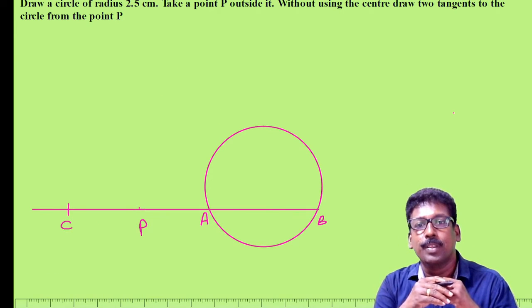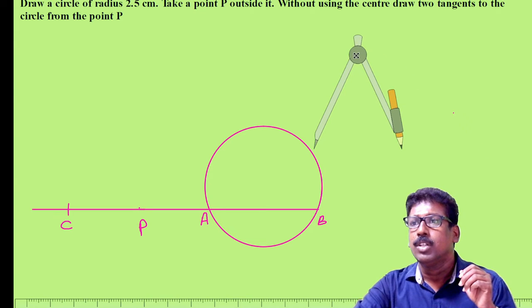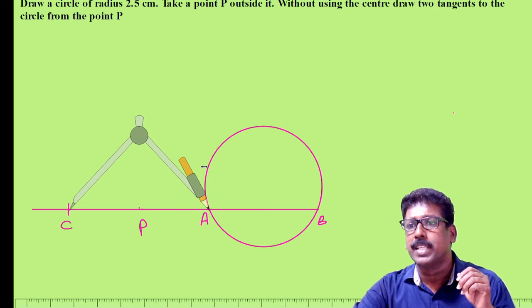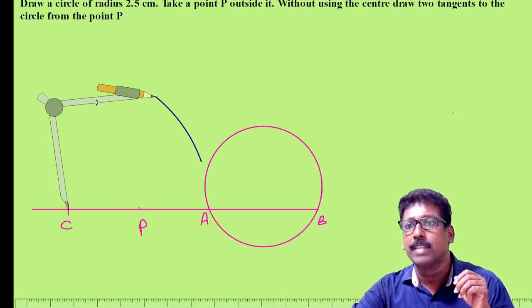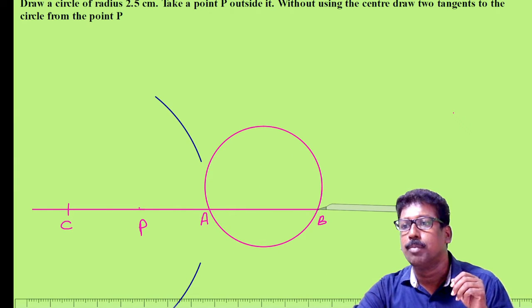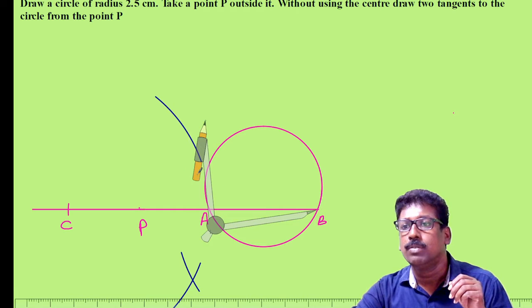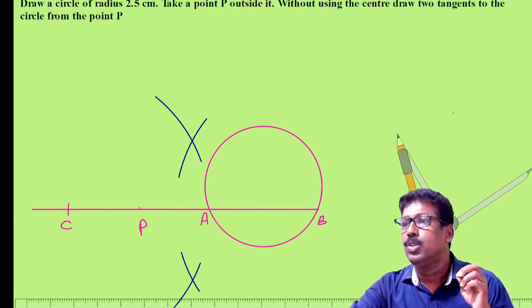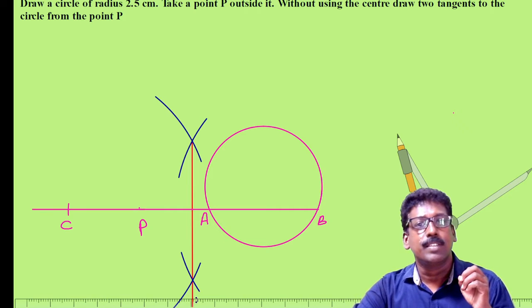Now you have to draw a semicircle with a diameter of BC. For that you need to know the center, so draw the perpendicular bisector of BC. With center C, more than half of BC as radius, draw two arcs on both sides of BC. Now with center B, same radius, intercept the arc of the previous step. Join these intersecting points — you will get the perpendicular bisector.